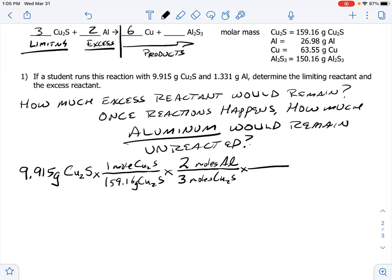I then need to convert moles of aluminum back to grams, so for every one mole of aluminum there are 26.98 grams of aluminum. And I punch these numbers into my calculator and it comes out at 1.120 grams of aluminum.